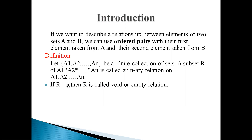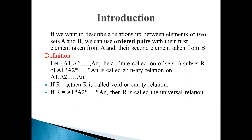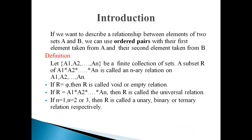If the value of R is equal to the empty set, then relation R is called a void or empty relation. If R equals the Cartesian product of a1, a2 up to an for n number of sets, then the relation R is called a universal relation. If the value of n equals 1, 2, or 3, then the relation R is called a unary, binary, or ternary relation respectively.